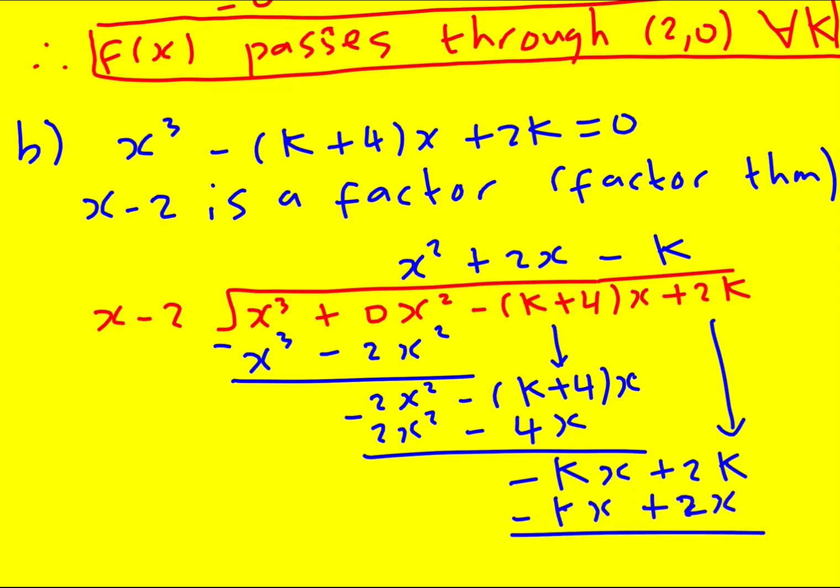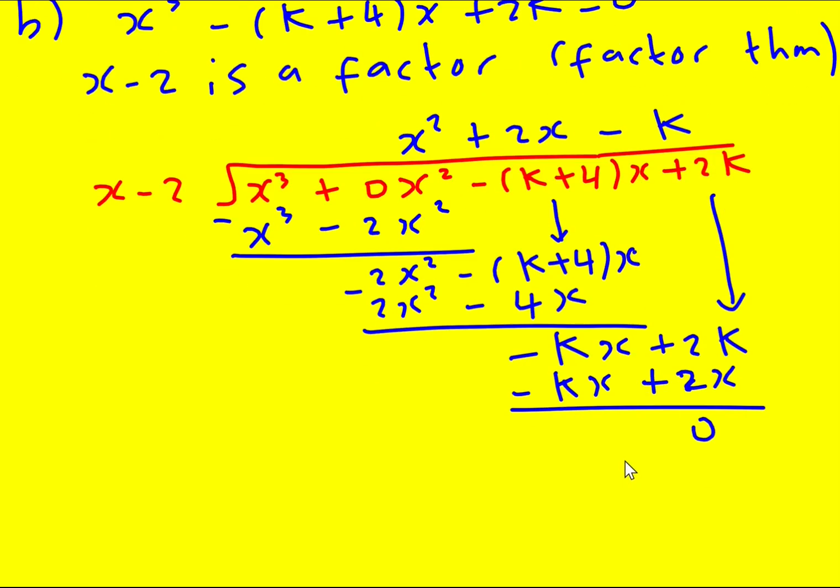Now when we subtract these, we've got -kx and -4x, and then we're minusing -4x, so they're going to cancel and we're just left with -kx. And finally x into -kx is -k, and we expect to get 0. If you didn't get 0, it means you made a mistake. Okay, so we've got (x-2) times (x² + 2x - k) equals 0.